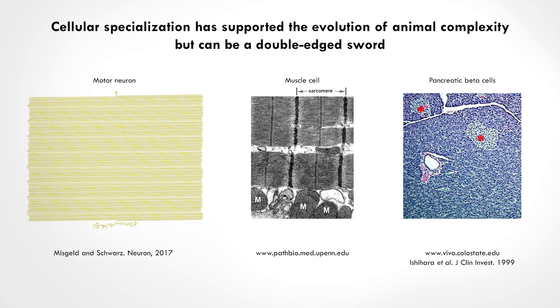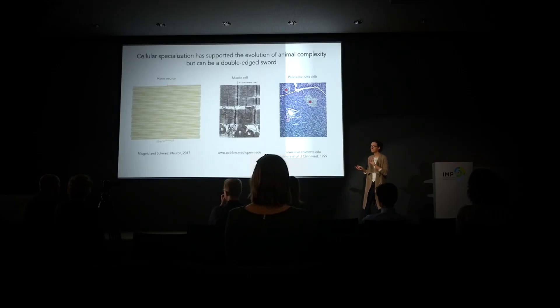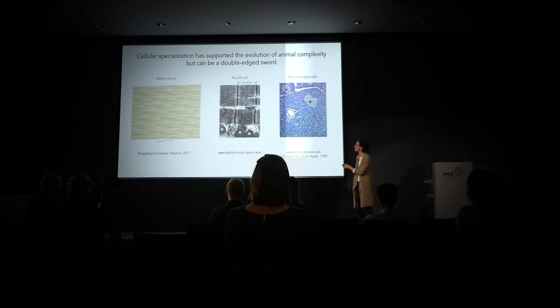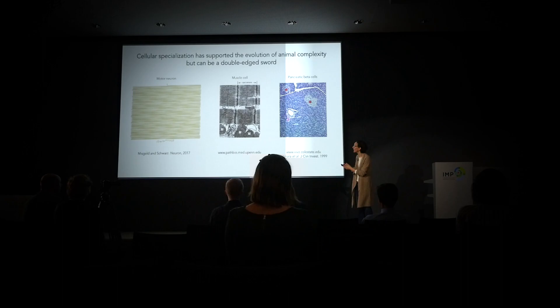This separation of function across different cell types has actually enabled the evolution of complexity in animal body plans. My lab is interested in trying to understand the basic gene regulatory mechanisms that control cellular diversification and specialization. However, I also want you to think about how these very dramatic specializations leave some cells vulnerable to particular environmental or genetic perturbations — for example, how this particular cell might be susceptible to any disruption of transport of molecules across the body.